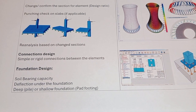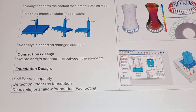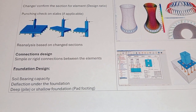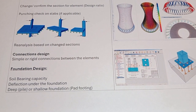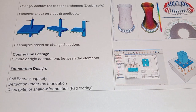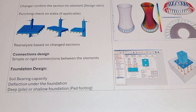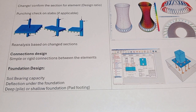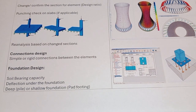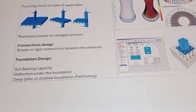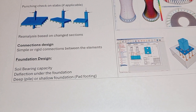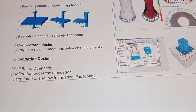After element design and assigning correct sections, we proceed to connection design. A connection can be simple or rigid. A simple connection means bending is not transferred, but for a rigid connection, bending load must always be taken by the connection point or joint.